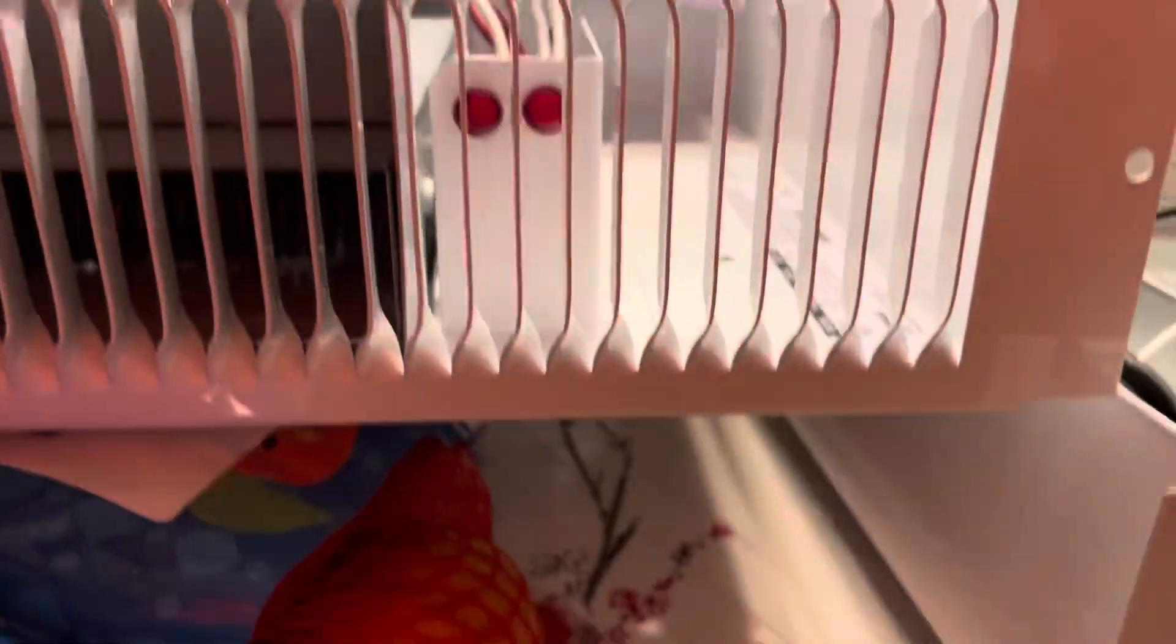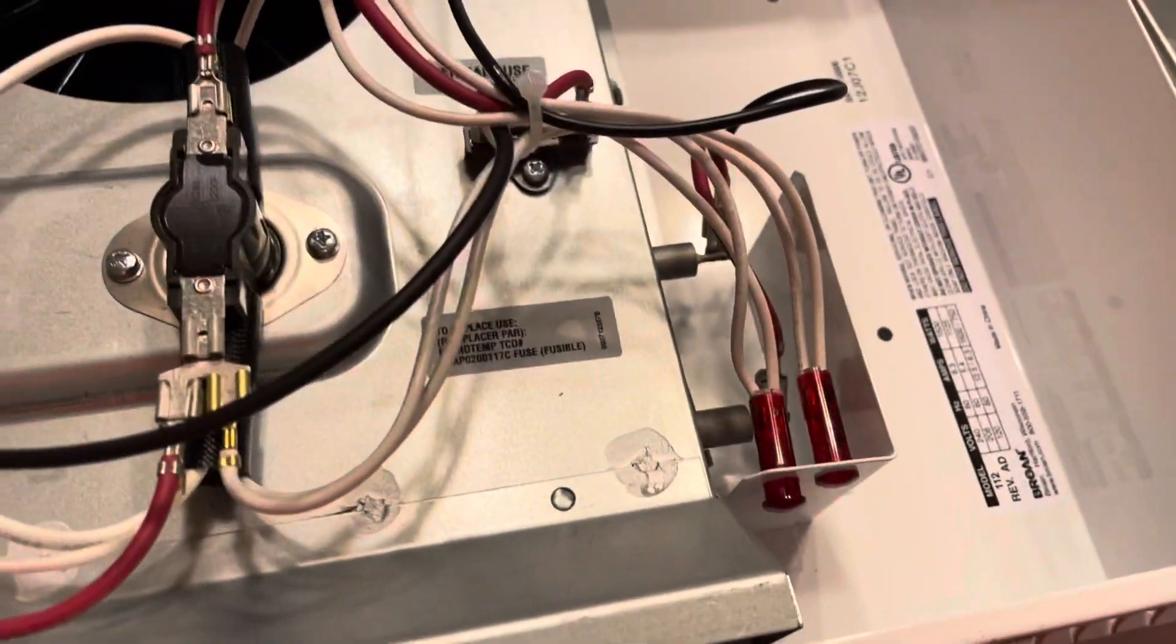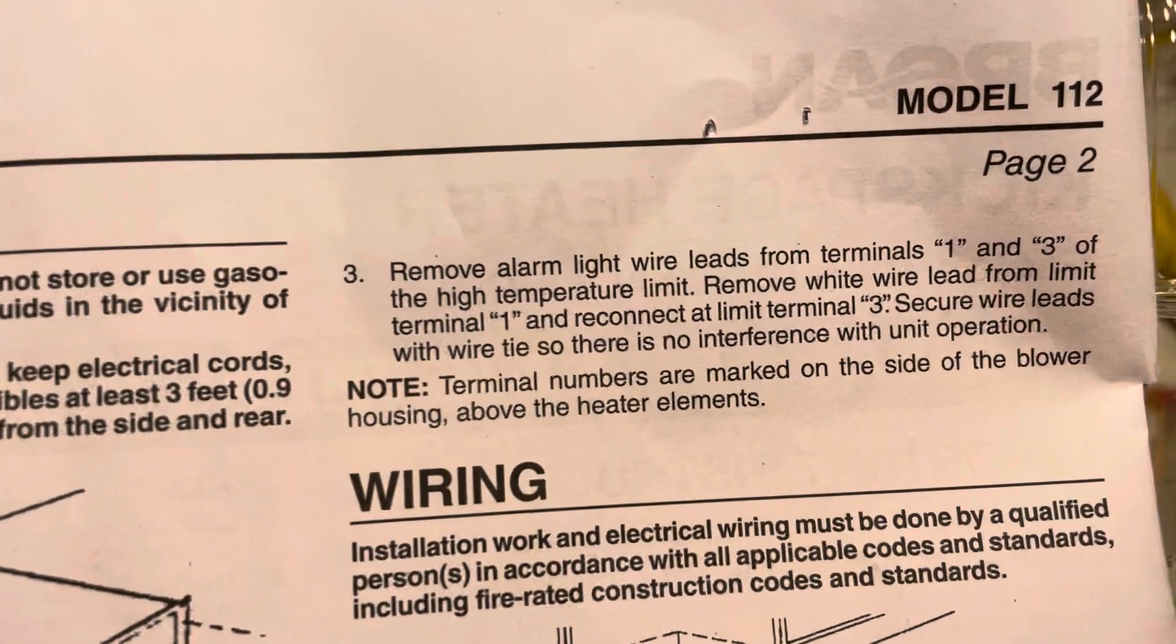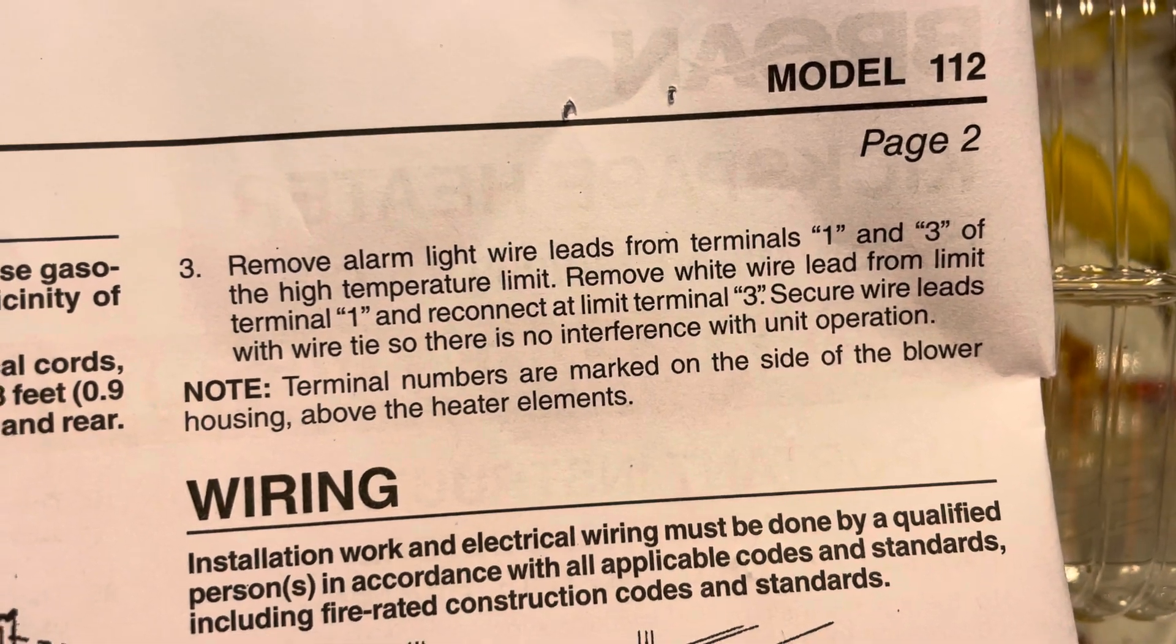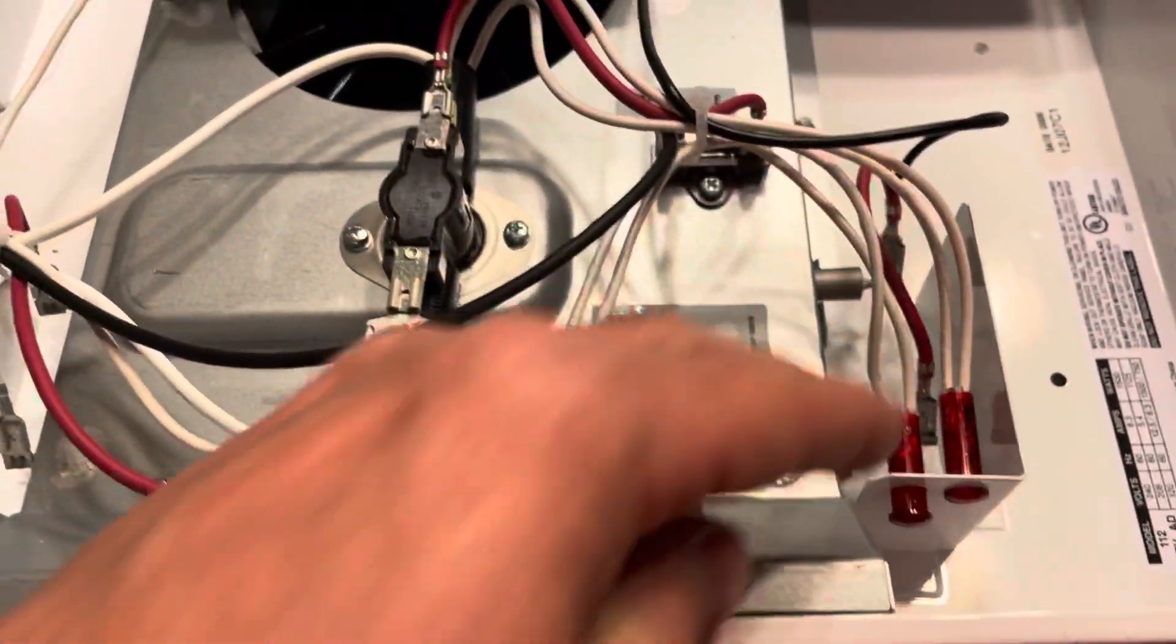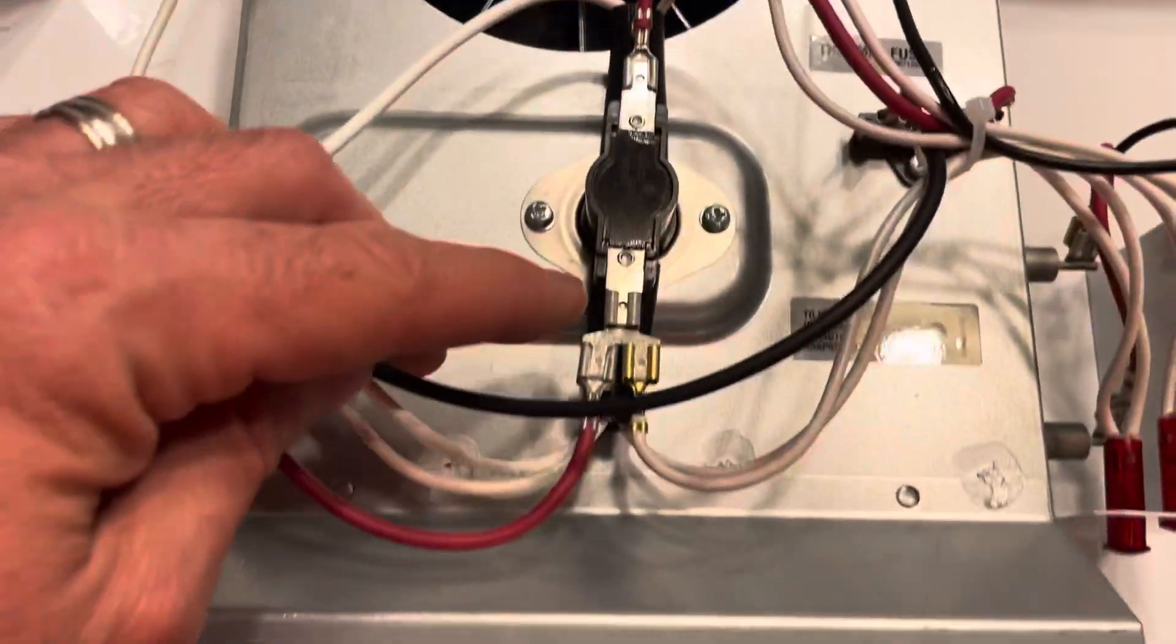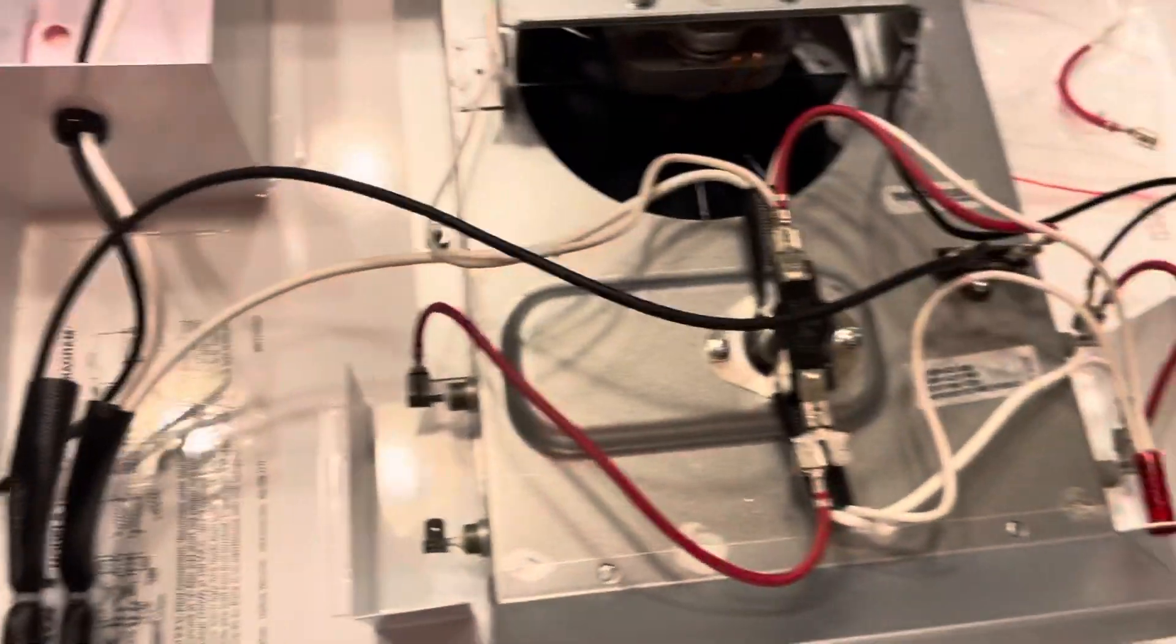It takes a while to figure this out, but this is the high temperature limit on the top. Here's the fan motor in here, here's the high temperature limit sensor, these are the lights, the warning lights that you would see from the front that would go on. But now that we're not on the 220 mode, what we're doing is we're disconnecting one of these. So we are removing the leads from terminals one and three.